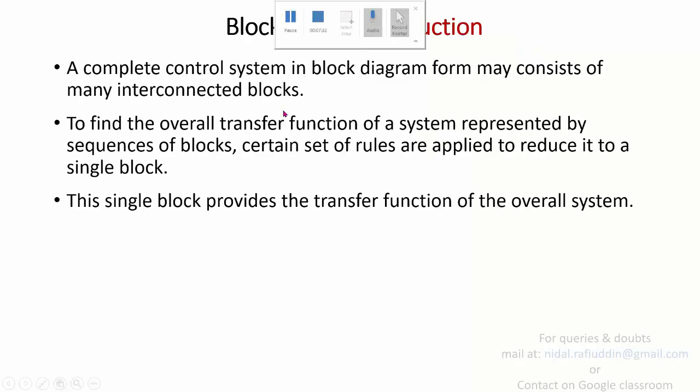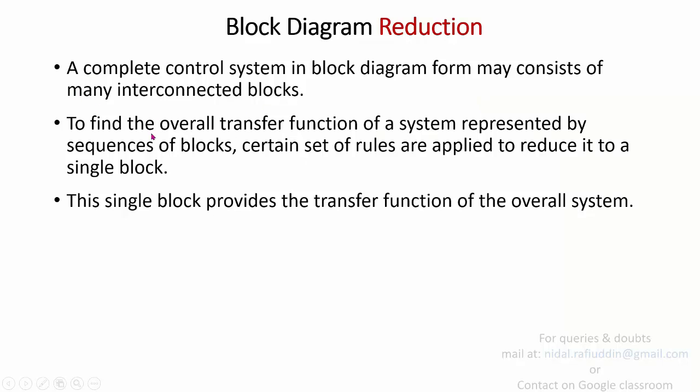Block diagram reduction is needed because a complete control system in block diagram form may consist of many interconnected blocks. To find the overall transfer function of a system represented by a sequence of blocks, certain rules are applied to reduce it to a single block. Once you have the block diagram representation, you reduce it using these rules to obtain the final transfer function of the overall system.